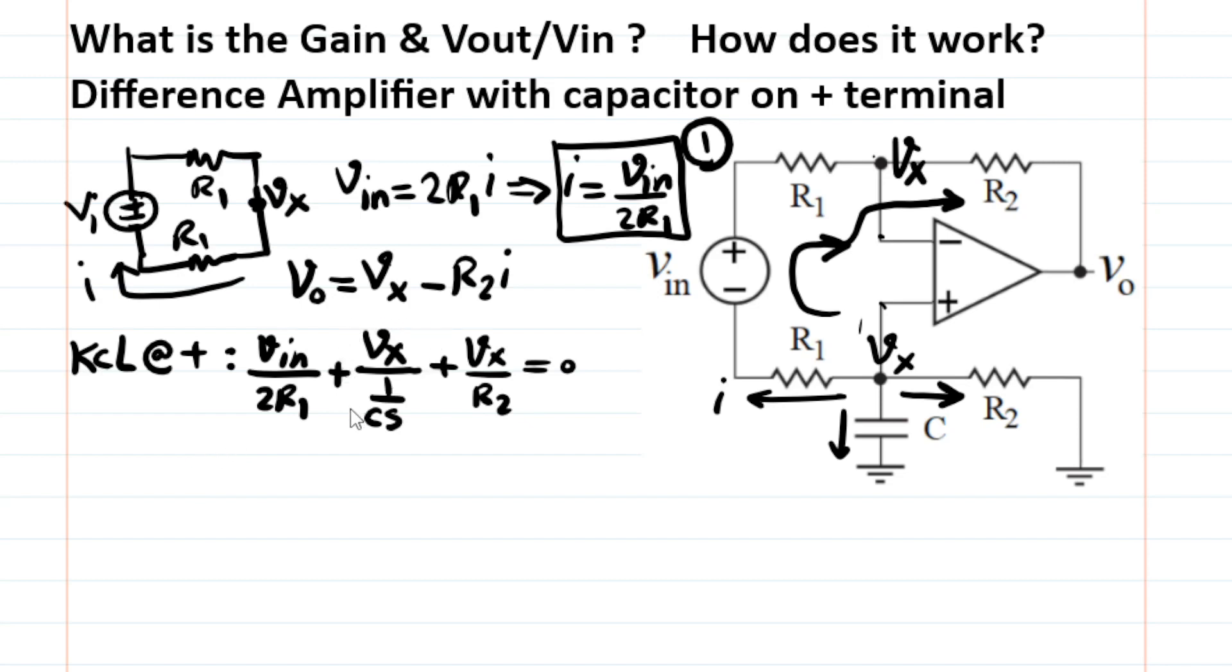So now moving the two components here that are function of Vx to the other side, I can find Vx as a function of Vin, or moving Vin to the other side. So as a result, I conclude that if you do that gain,